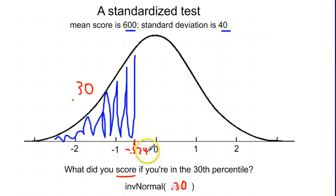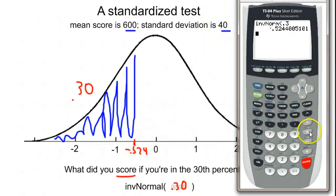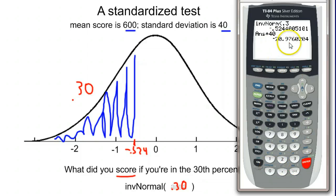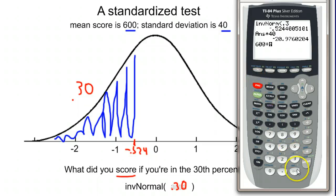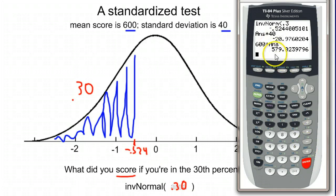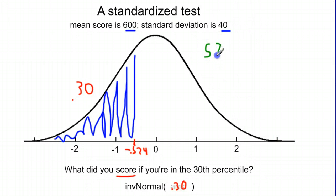We know our z-score is how many standard deviations we are above or below the mean — in this case it's below the mean because it's negative. So if I take that z-score times my standard deviation of 40, I scored 20.97 points below average. That would be 600 plus whatever z-score I got, which gives a score of just over 579. So I got a score of 579 on this test.